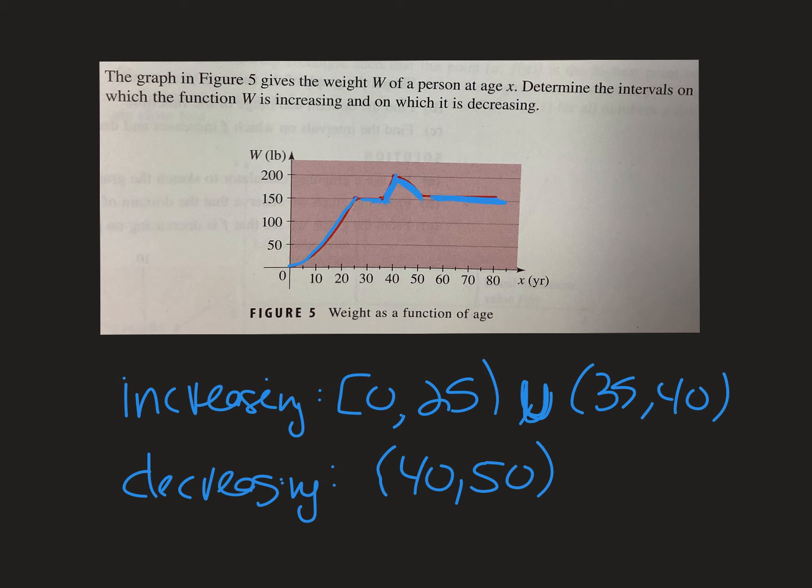When the graph is flat like that or it's not increasing or decreasing, we call it constant. Now this graph, the directions here didn't ask you for that, but that's what we would call it if it asks you where the graph was constant.